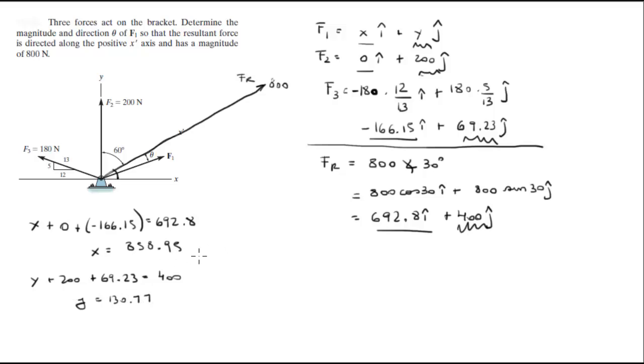So these are the components of f1. Now since f1 is equal to 858.95i plus 130.77j, you need the magnitude and the direction.